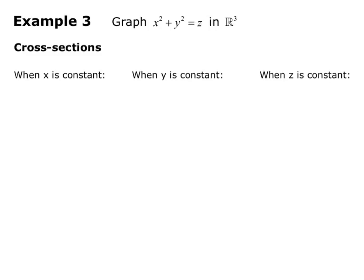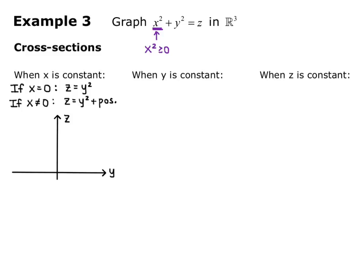When x is a constant, we'll figure out what the slices parallel to the yz plane look like. If x equals 0, then we get z equals y squared — that's a parabola. If x is not equal to 0, since x squared is greater than or equal to 0, we get z equals y squared plus a positive number. So these are right-side-up parabolas in the yz plane, and the positive term shifts them up.